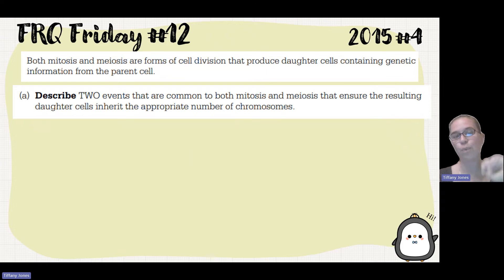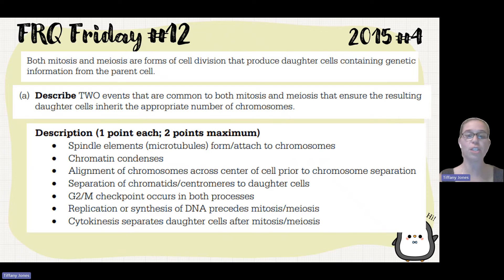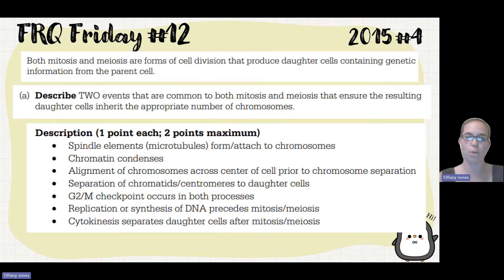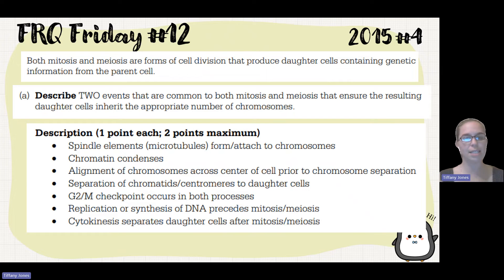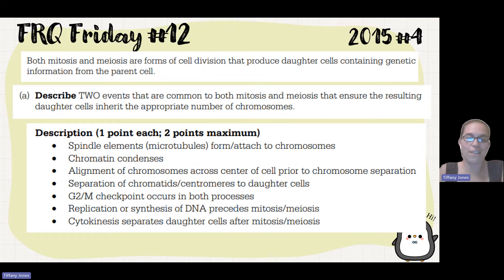You only have to describe two events, and the first two things you say are what will be recorded and scored. Things you could have put include: spindle elements — microtubules attaching to chromosomes so we can equally divide them; chromatin condensing, where DNA wraps around histones and condenses to form chromosomes; alignment of chromosomes across the center of the cell in metaphase so we can get equal division; and separation in anaphase, where chromatids or chromosomes move to opposite poles.